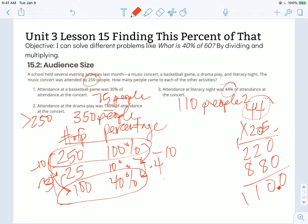Again, our objective states I can solve different problems like what is 40% of 60 by dividing and multiplying. So you can see that I used my unit rates table to divide and multiply to find other values for my percentages. Increasing or decreasing those percentages as needed to get to 30%, 140%, and 44%. Thanks for watching!